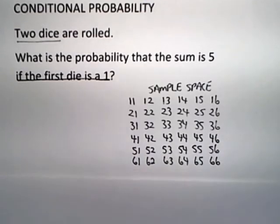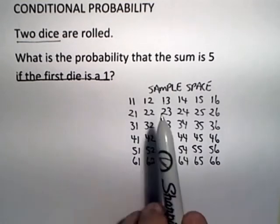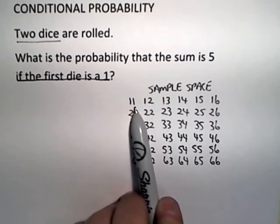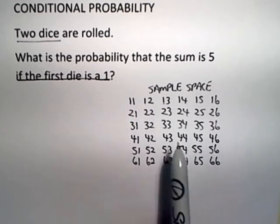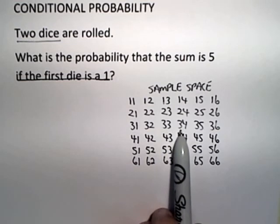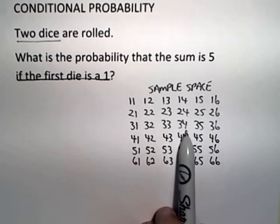My preference is to write it as a 6 by 6 array where the first number indicates the roll of the first die and the second number indicates the roll of the second die. So, for example, 3, 4 means that the first die was a 3 and the second die was a 4.